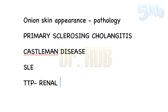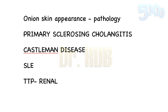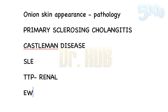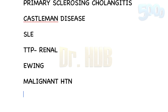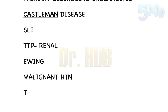Next is Ewing's sarcoma — in Ewing's sarcoma there is a laminated periosteal reaction, presenting as an onion skin appearance. Then there is malignant hypertension, which is associated with onion skin lesions as well as hyperplastic arteriolosclerosis.